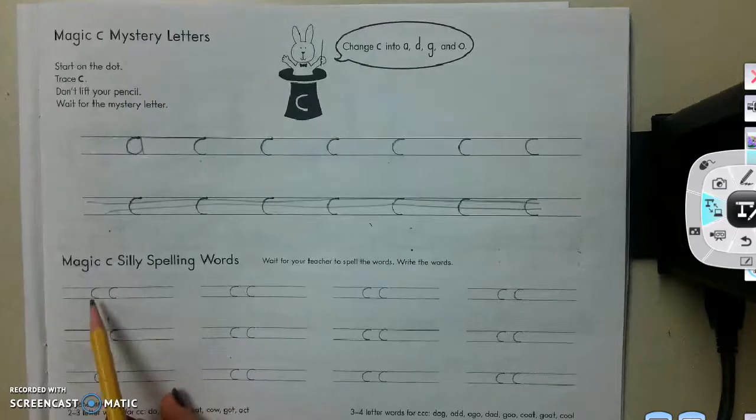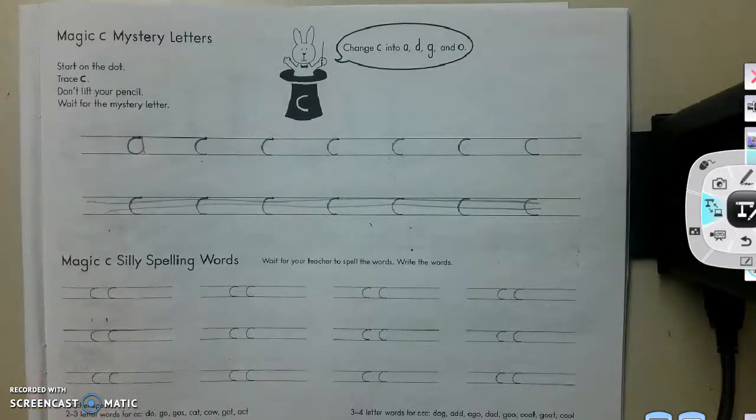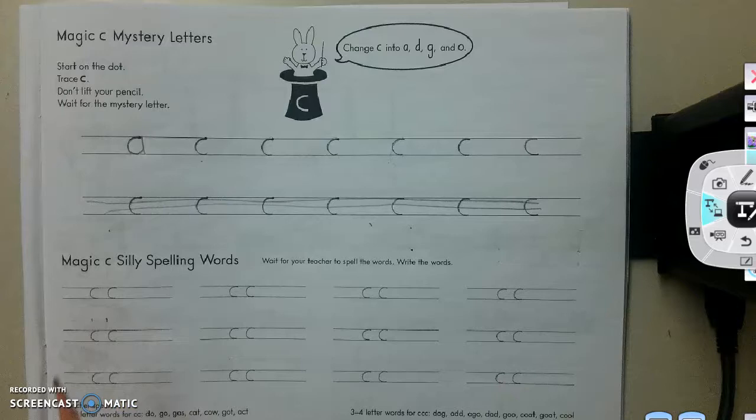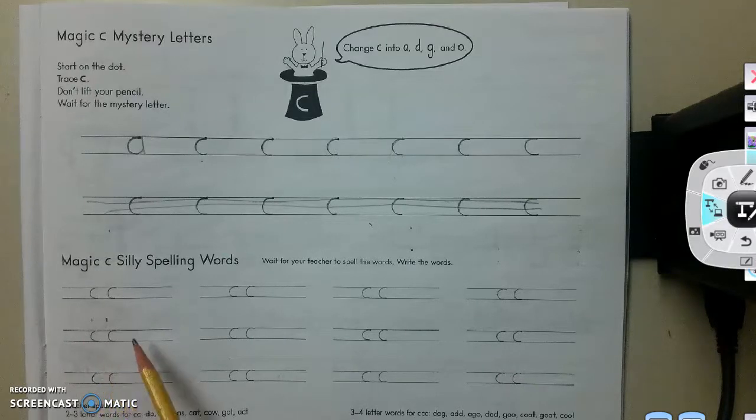Okay, so the first Magic C spelling word is GOT. Write the word GOT. And let's just go down the columns. So we'll just go down and then to the next one. Okay. The next Magic C spelling word is GAS. Write GAS. Down at the bottom here, I would like you to write CAT. C-A-T. CAT.